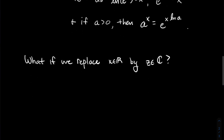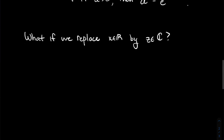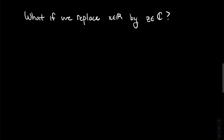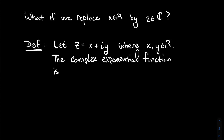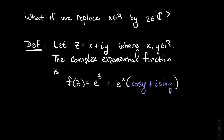Here's the new thing: what if we replace the real input x by a complex input z? Here is our definition of the complex exponential. If we take a complex number z = x + iy where x and y are real, the complex exponential is defined as: e^z = e^x · (cos y + i sin y). So the imaginary part of z goes into the trig functions, and the purple part — cos y + i sin y — can be expressed as e^(iy).